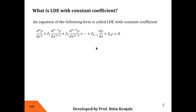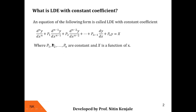Here y is the dependent variable and these are its various derivatives — this is the first order derivative, this is the (n−2)th order derivative, and this is the nth order derivative of y. See that all these derivatives appear in degree 1, therefore this is a linear differential equation. Apart from this, p1, p2, p(n−1), pn are all real constants. Therefore, this is a linear differential equation with constant coefficients.